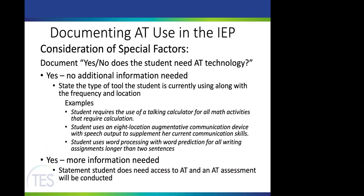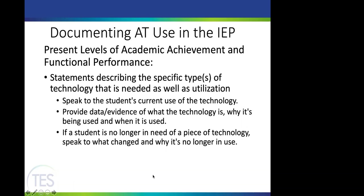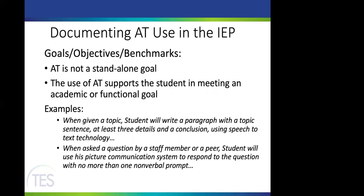Under consideration of special factors, you document yes or no whether the student needs AT. If yes and no additional information is needed, document the tool type, what the student is currently using, and the frequency and location — for example, 'student requires use of a talking calculator for all math activities that require calculation.' If the need is identified but the specific tool is not yet known, document that an assessment will be conducted. In the present levels section, state what the student is currently using, the evidence for why, and when it'll be used — including if a technology is no longer needed and why.